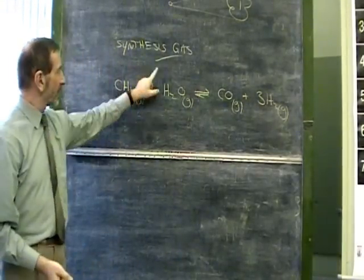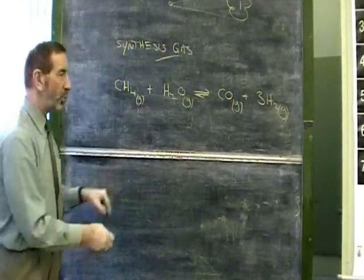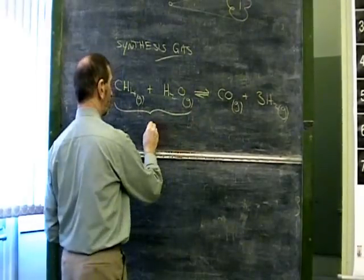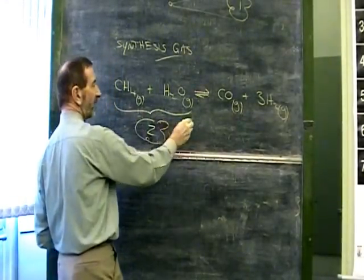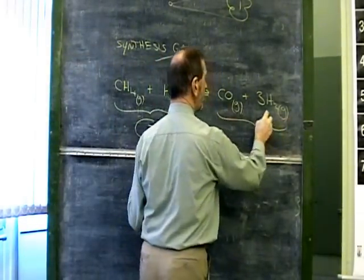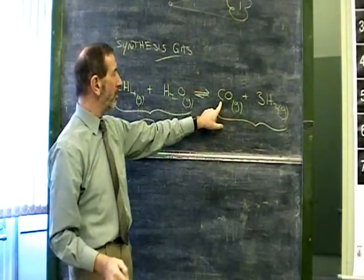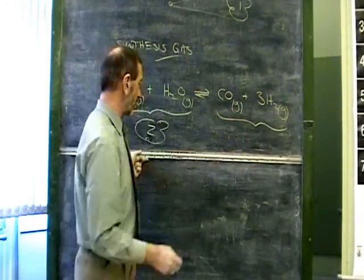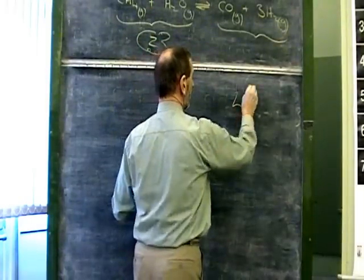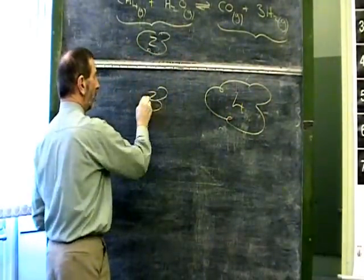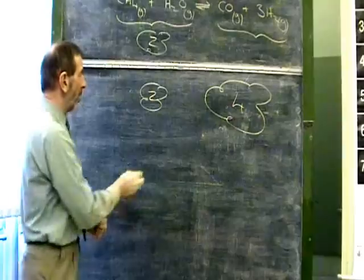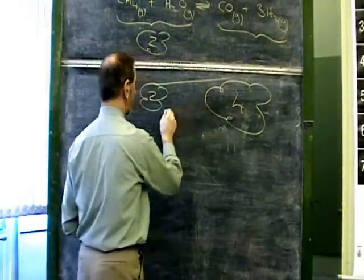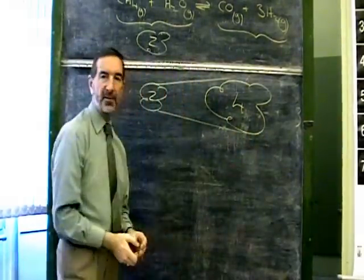So, gases abound. Let's have a look at the volumes. How much gas on the left? Well, one mole of methane and one mole of steam means we've got two moles of gas on the left. But there's considerably more gas on the right. We've got one mole of carbon monoxide and three moles of hydrogen. So we've actually got four moles of gas on the right hand side. Going from left to right involves an increase in volume.